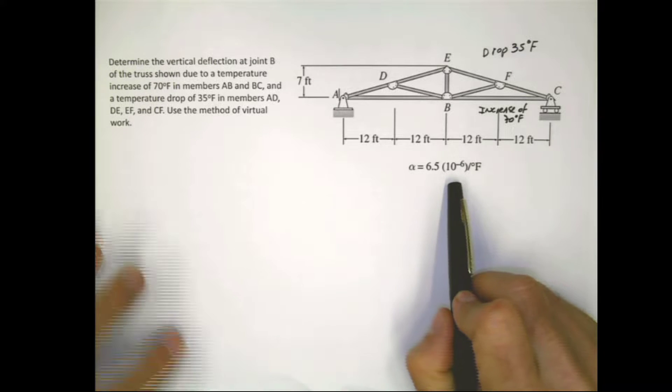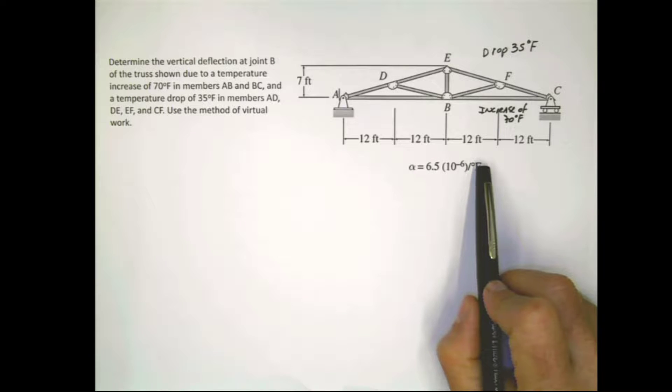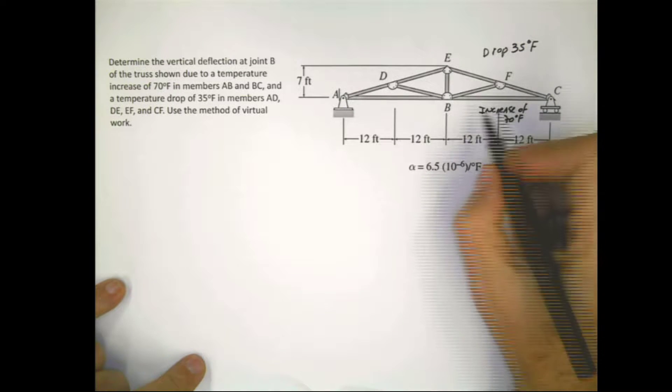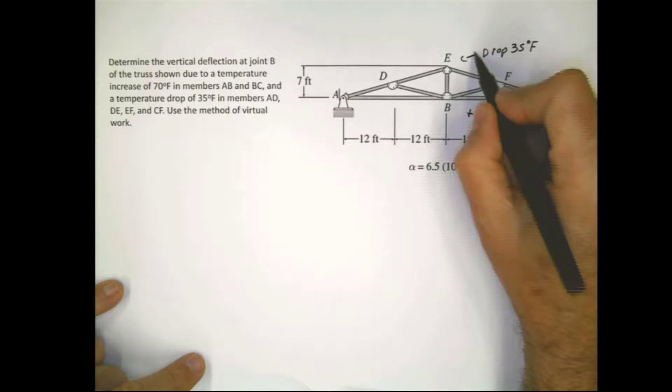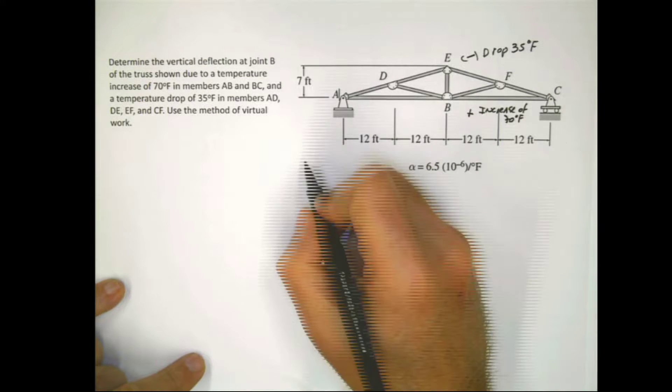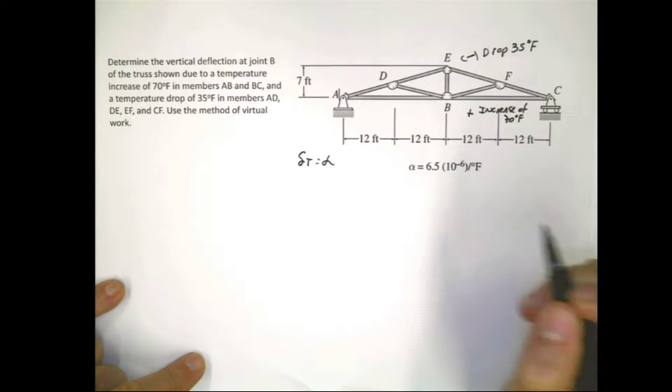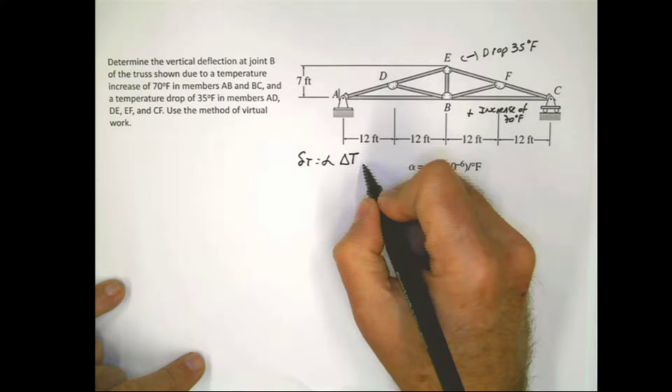You have here this thermal coefficient. And this thermal coefficient is given to you, because if you remember, and even if you don't remember now I'm going to tell you, that an increase in temperature is going to cause an expansion, and a decrease in temperature is going to cause a contraction. You have a formula from Mechanics of Materials that the deformation due to thermic reasons is that coefficient, the thermic coefficient, multiplied by the difference in temperature and multiplied by the length of the member.